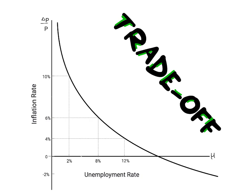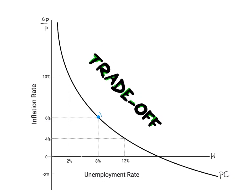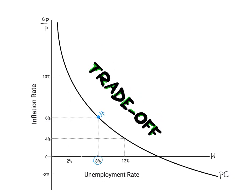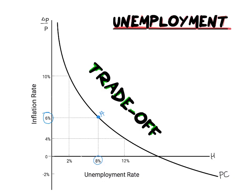To illustrate this trade-off, we will start at point A where we have an inflation rate of 6% and an unemployment rate of 8%. Suppose that we are dealing with an economy that focuses largely on employment and will therefore need to reduce the unemployment rate. This can be done by accepting a higher rate of inflation. We will therefore move from point A upwards along our PC curve to point B, where we will have an inflation rate of 10% and an unemployment rate of 2%. The unemployment rate therefore reduced from 8% to 2% at the cost of higher inflation from 6% to 10%.